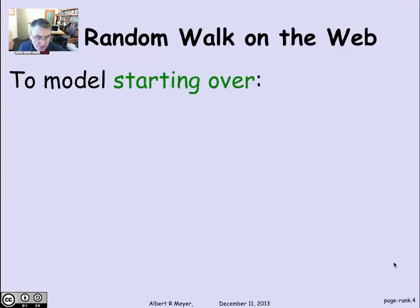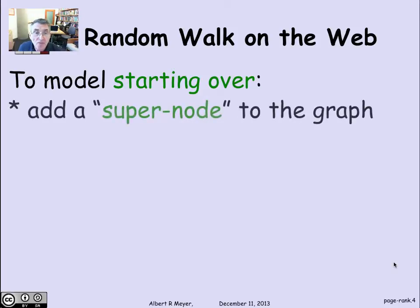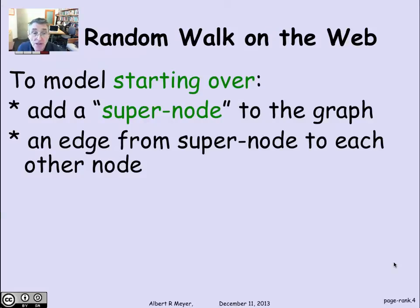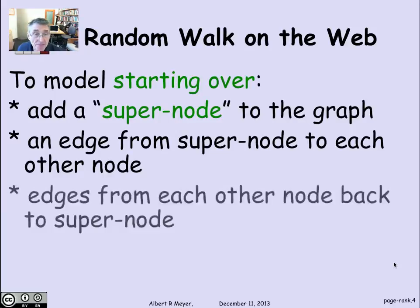To model this aspect that users start over again if they get bored or stuck, we can formally add to the digraph a hypothetical super-node with the property that there's an edge from the super-node to every other node with equal likelihood. Once you're at the super-node, following an edge is tantamount to picking a random page and starting over again.